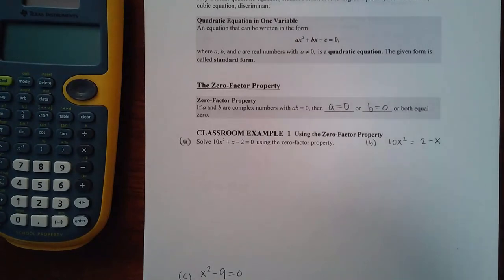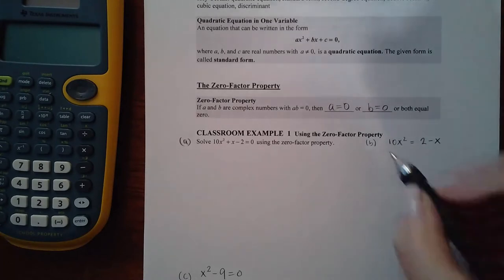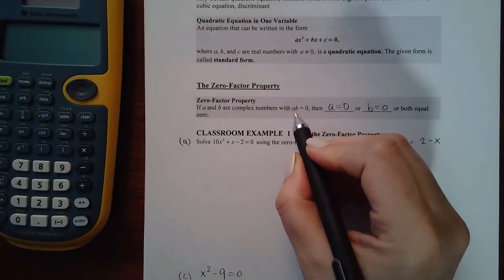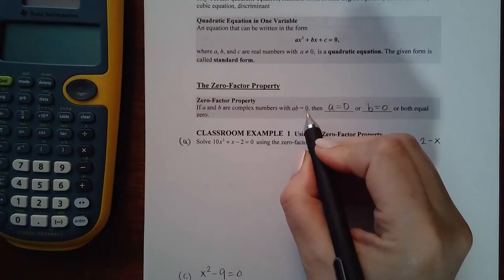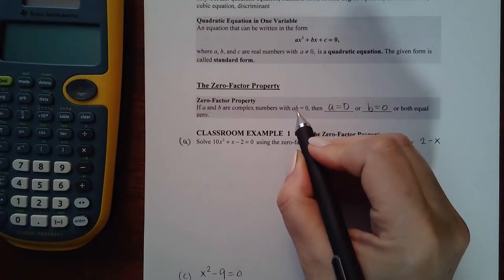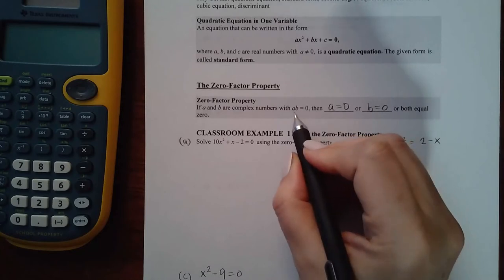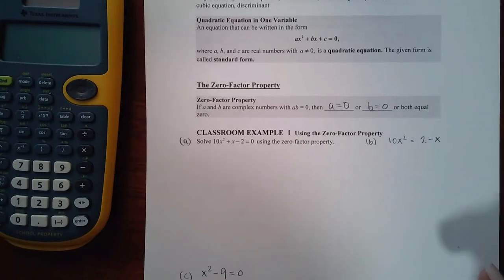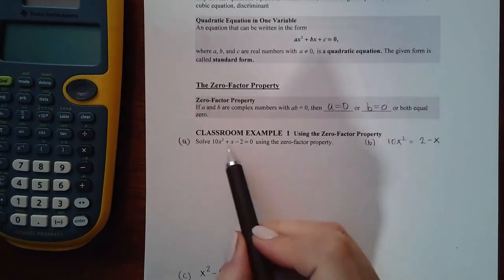The zero-factor property says if a and b are complex numbers where a times b equals zero, then a equals zero or b equals zero or both equal zero. Remember, in order for you to multiply to get zero, either a had to be zero because zero times anything is zero, or b had to be zero, or if both of them are zero then you can still get zero.